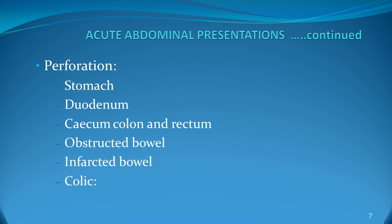There could be perforation either from the stomach, duodenum, cecum, colon, obstructed bowel, or infarcted bowel, or there could be colicky abdominal pain for a long time. Stomach and duodenal perforation are associated with a prolonged history of ulceration. The patient will have epigastric pain and could be on PPIs for a long time.